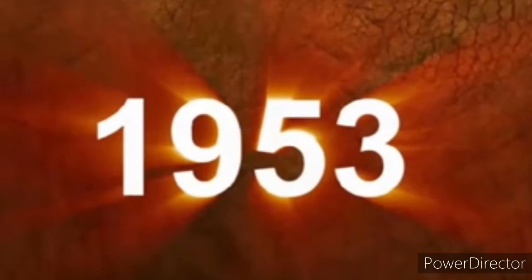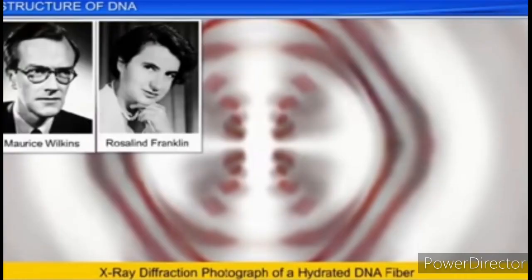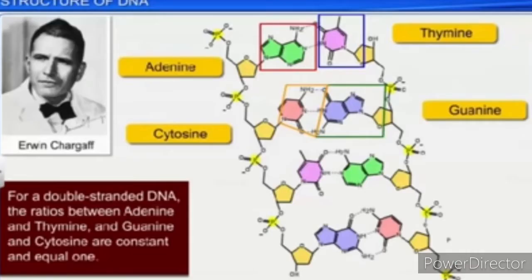In 1953, James Watson and Francis Crick, based on X-ray diffraction data produced by Maurice Wilkins and Rosalind Franklin, proposed a very simple but famous double helix model for the structure of DNA. One hallmark of their proposition was base pairing between the two strands of polynucleotide chains. This proposition was also based on the observation of Erwin Chargaff that for a double-stranded DNA, the ratios of adenine to thymine and guanine to cytosine are constant and equal to one.